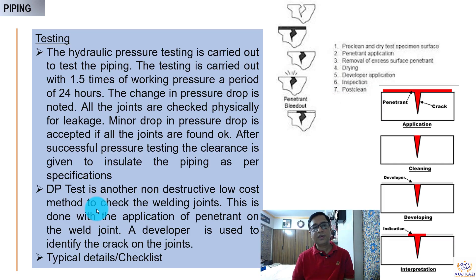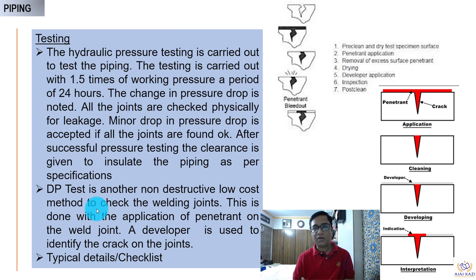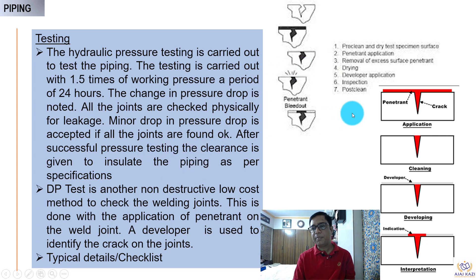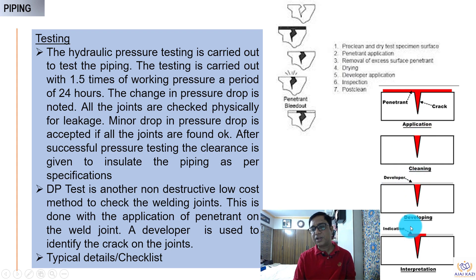When the entire piping is done, testing has to be performed. Generally, testing is done at 1.5 times the working pressure for 24 hours. Another quick method is the DP (dye penetrant) test — apply a penetrant, and if there is a crack, apply the developer. After inspection, if there is a red indication, there is a crack.